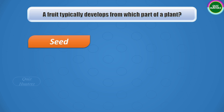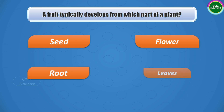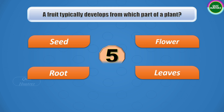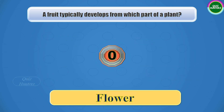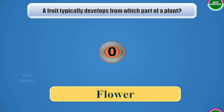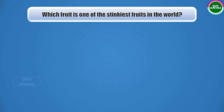Next question: a fruit typically develops from which part of the plant? Options are seeds, flower, root, or leaves. Your time starts now. And the correct answer is flower.